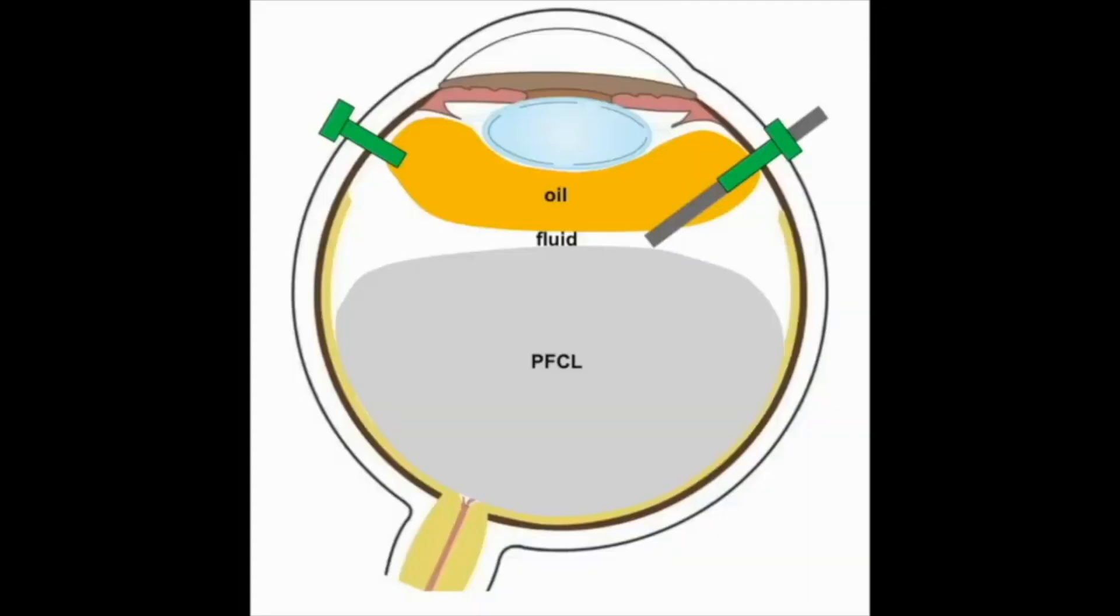The diagram shows the vitreous cavity flows at the beginning of the exchange. It's important to first aspirate the BSS layer on top of the PFCL before moving to aspirate the peripheral carbon liquid, as shown in the diagram.